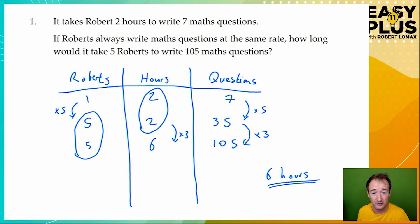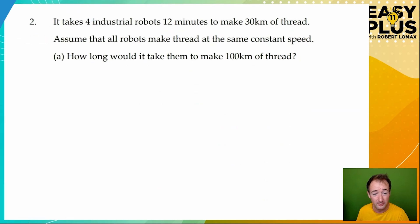In each row, we're making one deliberate change, and that causes another change. So one way of looking at it is to say that we always leave one thing the same. So here we've left two hours the same, and here we've left five Roberts the same. And this way the answer pops out really easily. It would take five Roberts six hours to write 105 questions. Don't forget to write the units. Six isn't an answer. Is that six minutes, six seconds, six days? You need to write six hours.